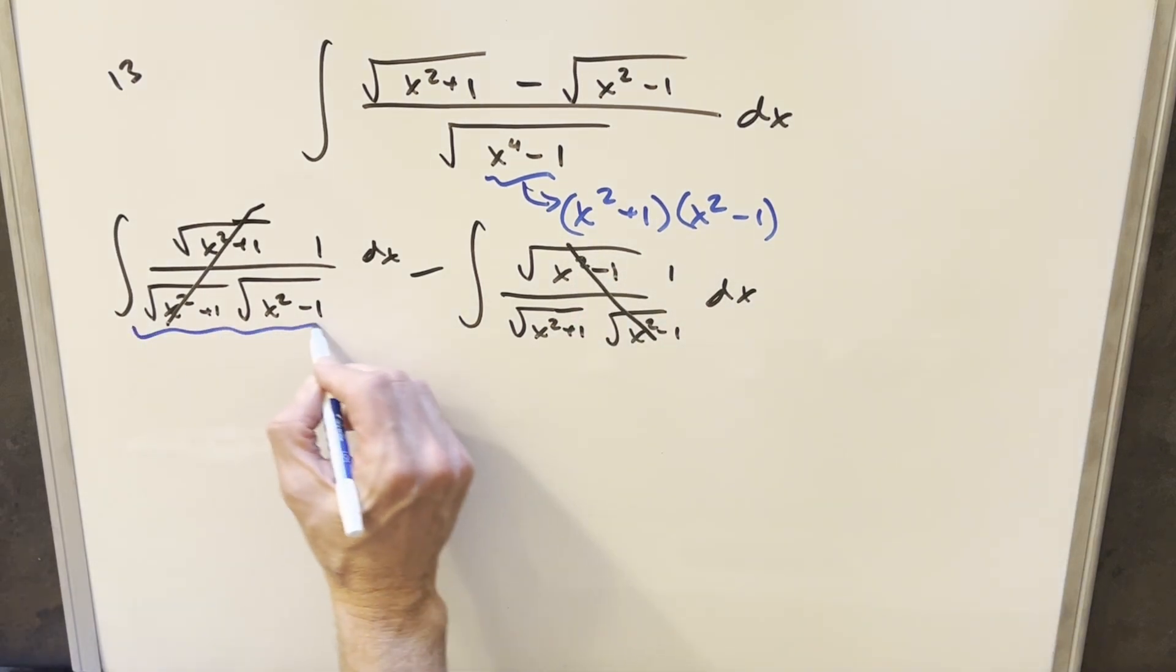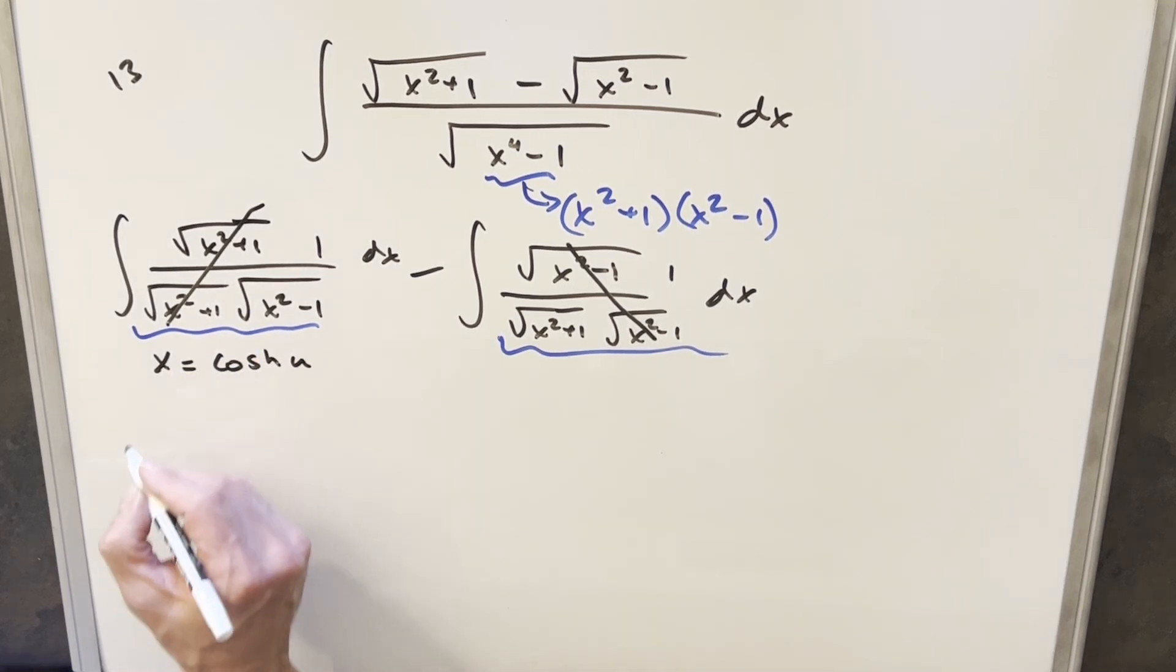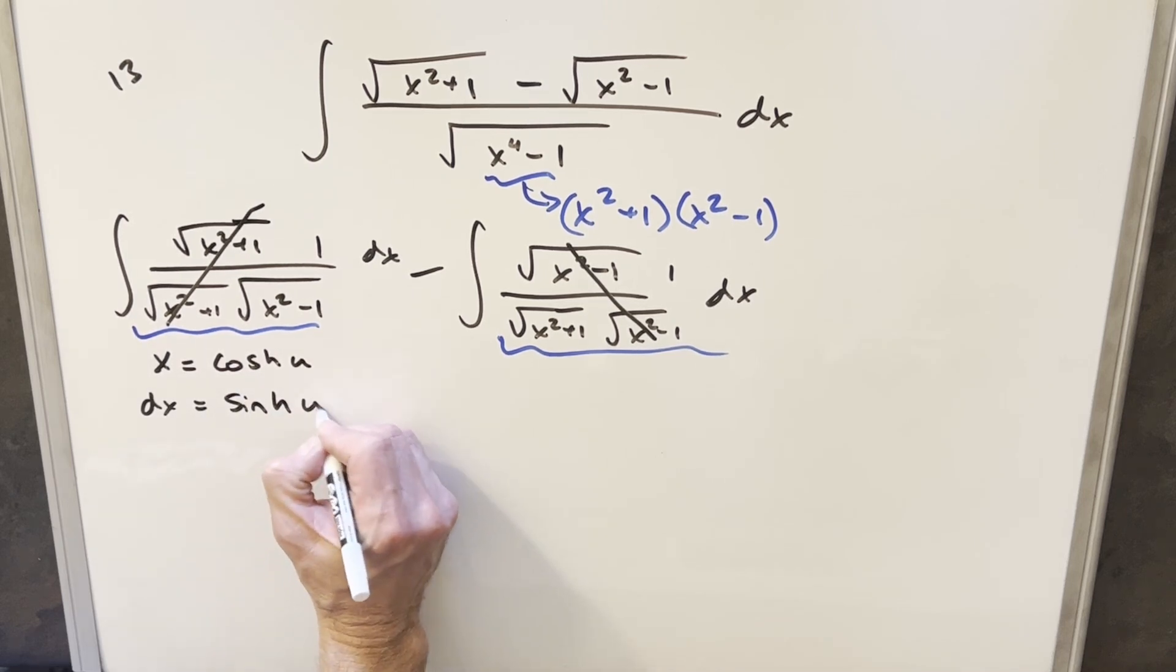And then now in this form, these are actually just well known integrals. I could use a formula on this, but I think I'm actually going to do the substitution out. For this first one, I'm going to substitute x equals cosh of u, and then our dx value is going to be sinh u.